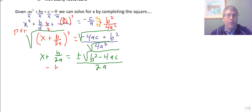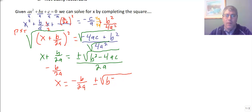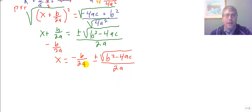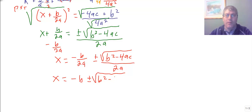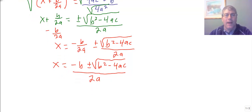All we have to do now is solve for x: subtract b over 2a from both sides. We get x equals the opposite of b over 2a, plus or minus the square root of b squared minus 4ac, all over 2a. Combining over the common denominator of 2a, we get x equals negative b plus or minus the square root of b squared minus 4ac, all over 2a. And that is the quadratic formula.